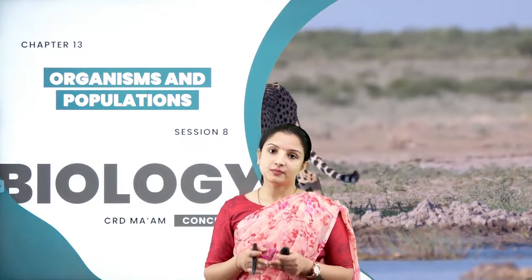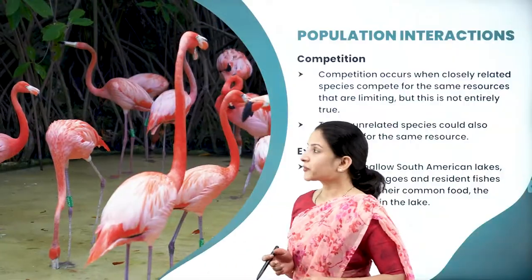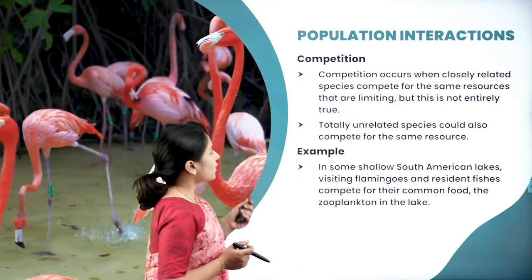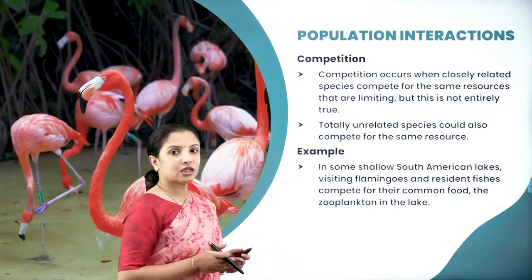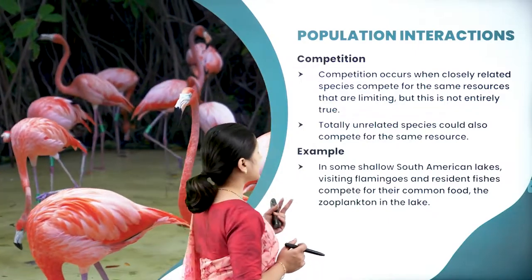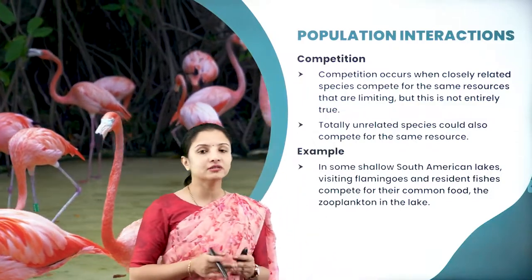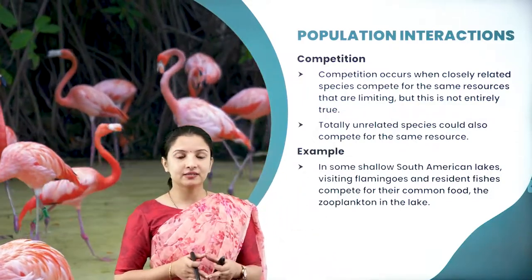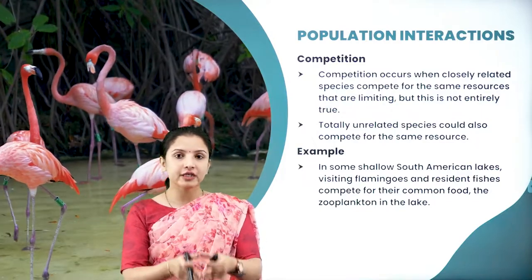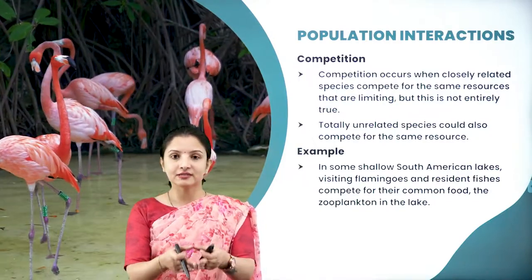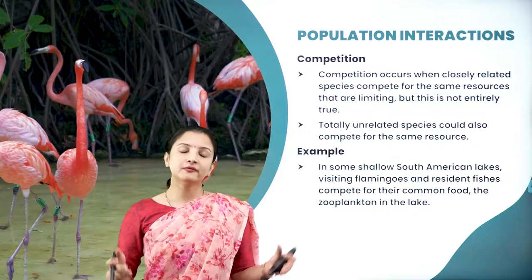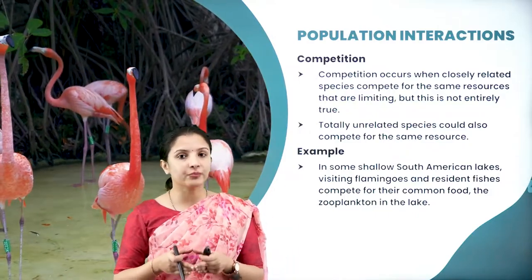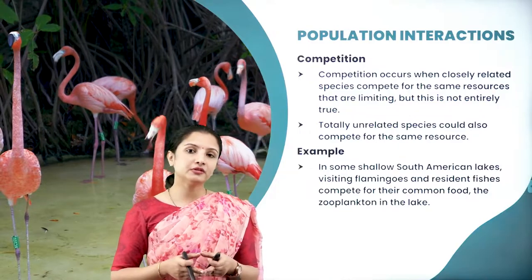In competition, both organisms are not benefited in nature. Competition occurs when two closely related species compete for the same resource. For example, in a grassland they compete for feeding on the grass, which is the resource. All the herbivores living in that particular grassland compete for the grass.